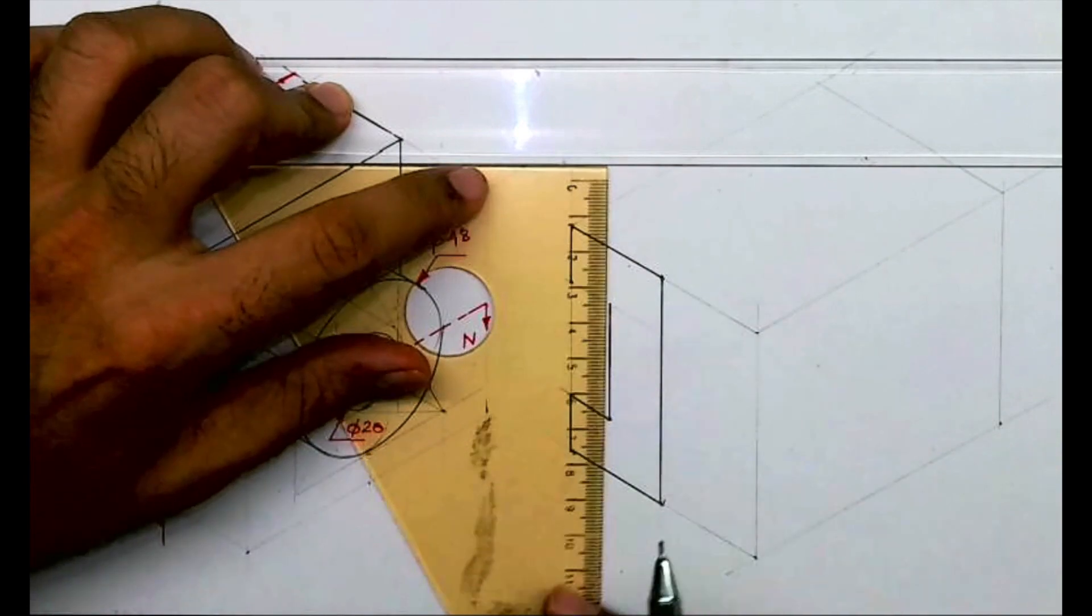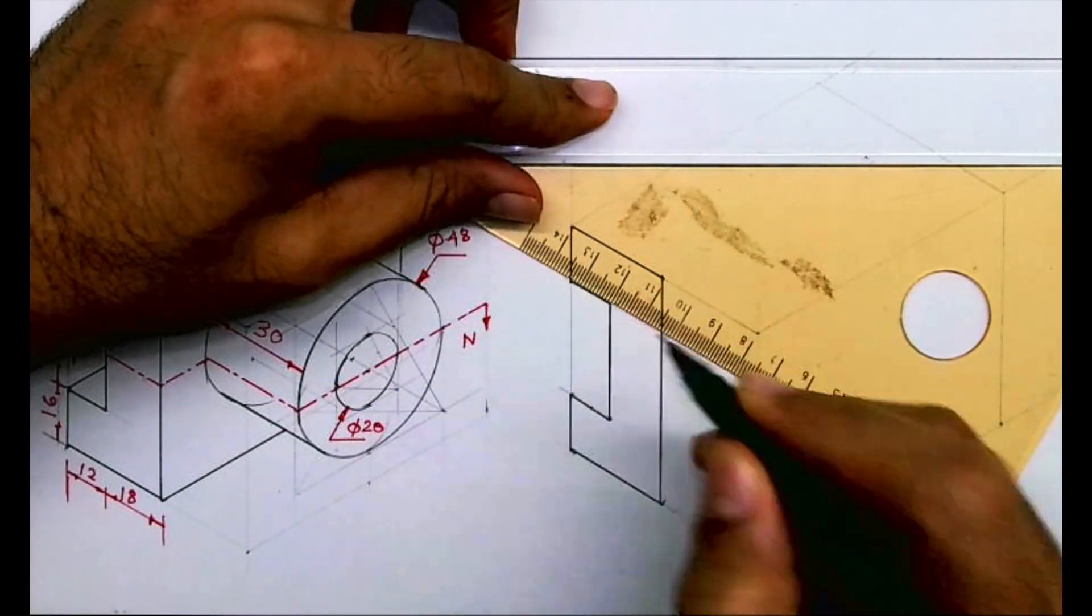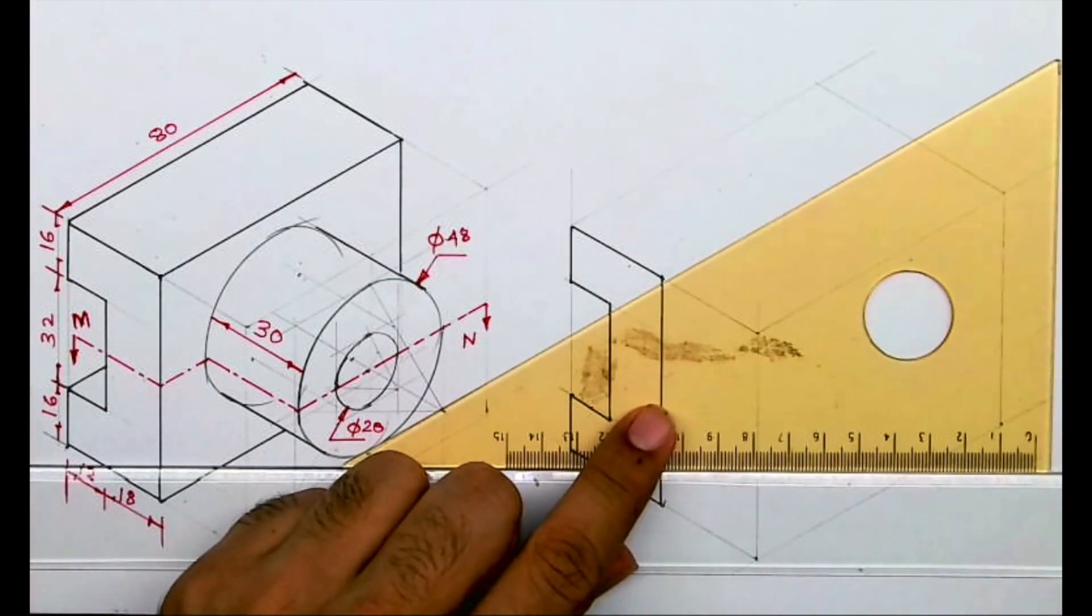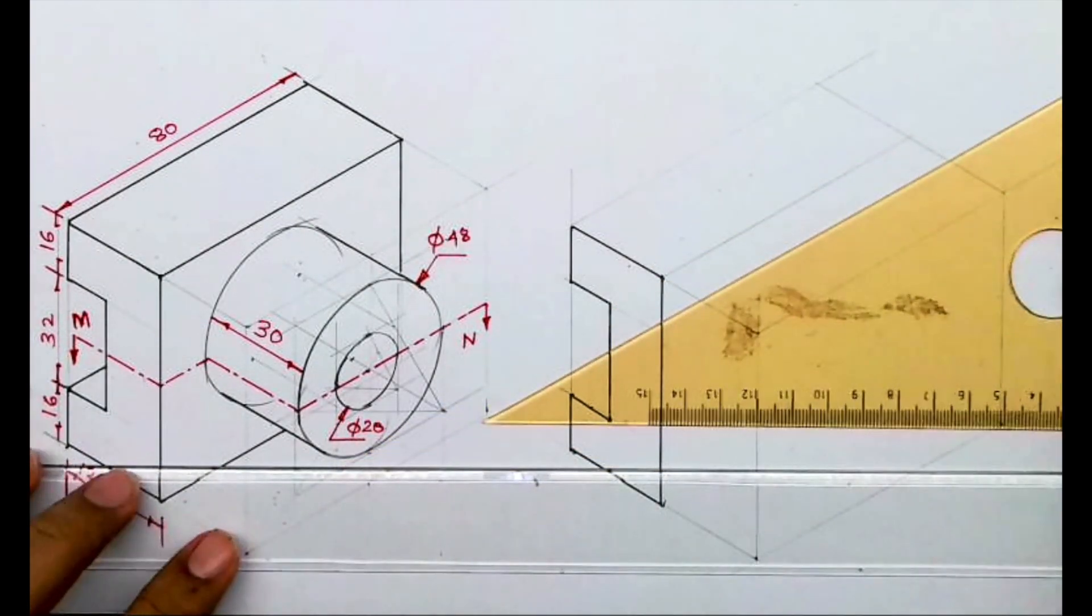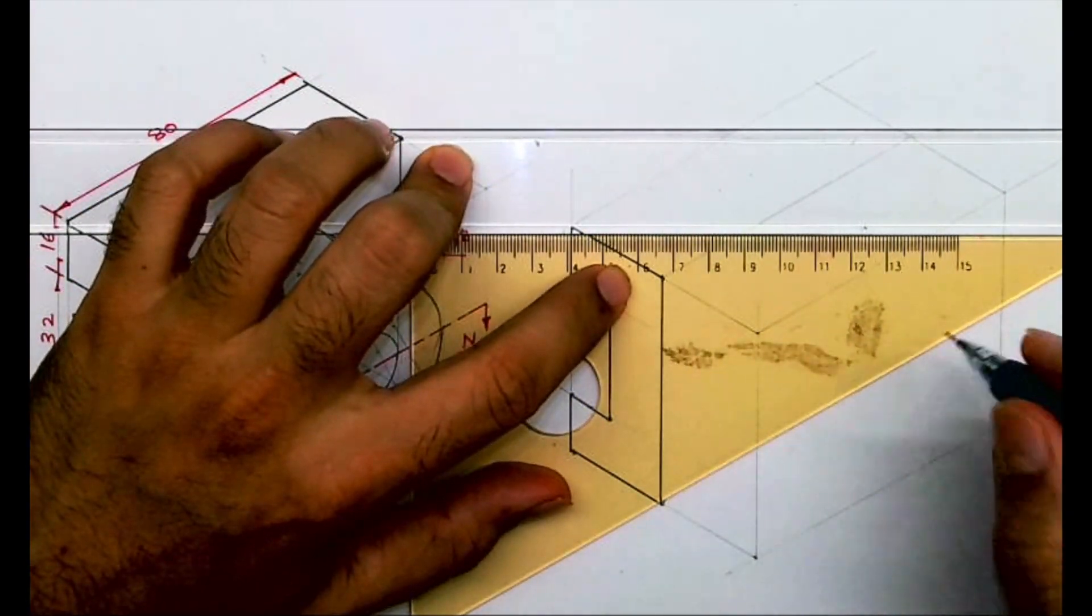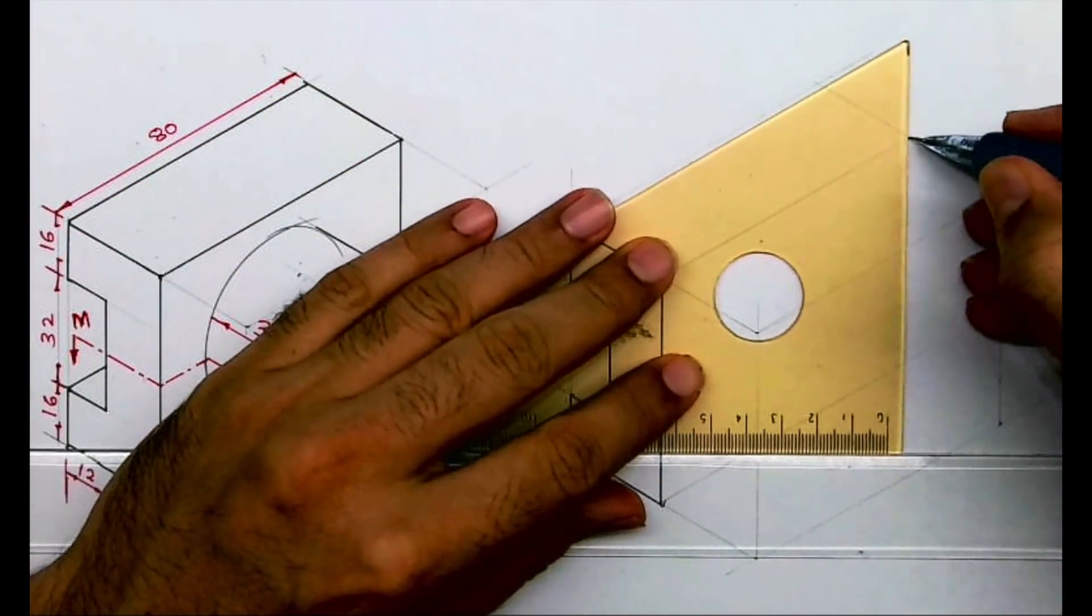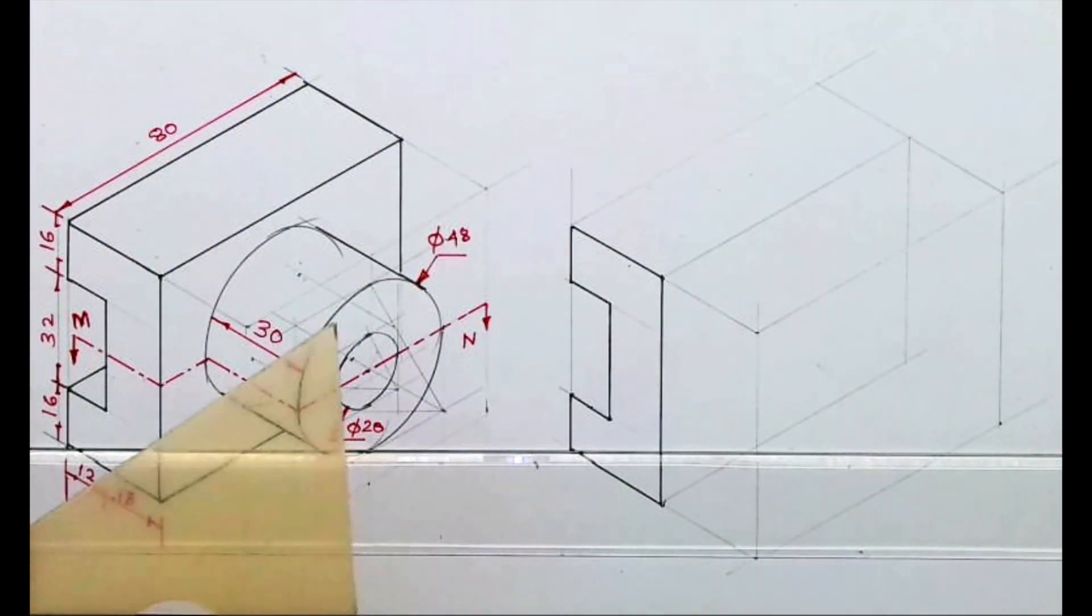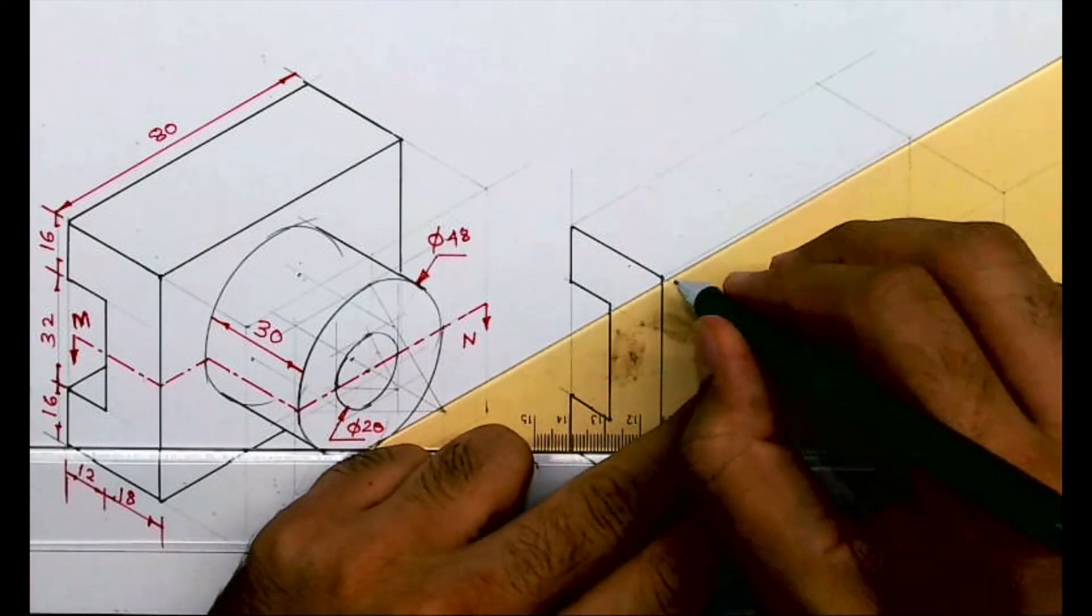From here you go up. Then you take this line inside by 80. You take this also inside by 80 and you draw a vertical line. After drawing this much, we'll draw this slot.